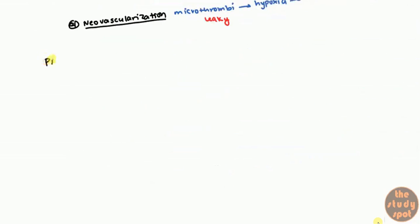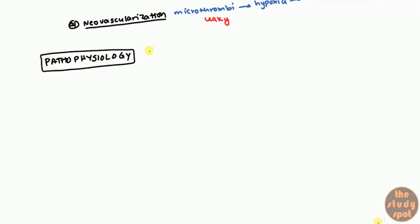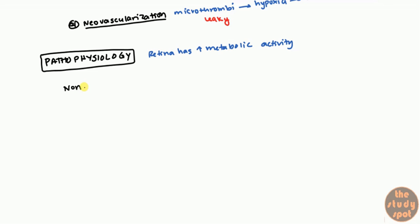Now let's talk about the pathophysiology — what effects do these high blood flows and edema have. One important thing to keep in mind is that the retina has very high metabolic activity. So even small drops in blood flow cause a large reaction from the retina. Diabetic retinopathy has two stages. The early stage is known as non-proliferative diabetic retinopathy, also written as NPDR. Non-proliferative means it is not creating new cells yet.